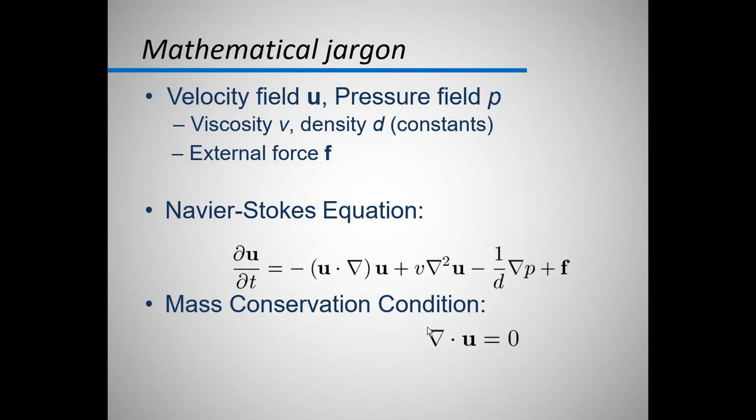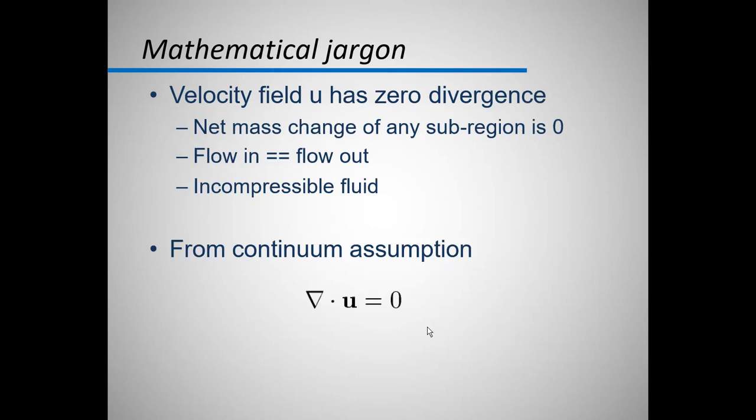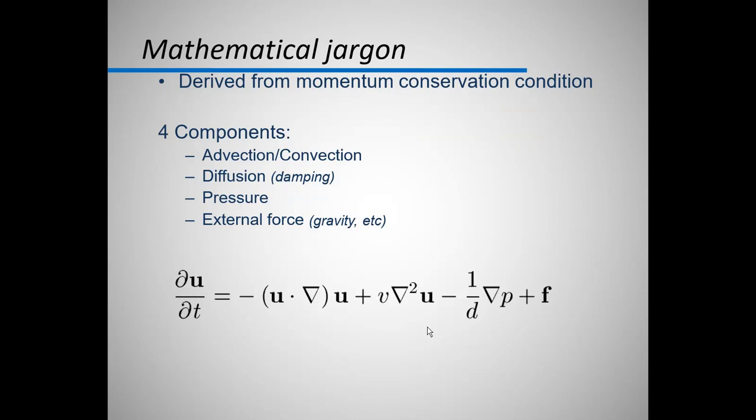We have the continuity equation which is the famous equation you might have known from your undergraduate course in fluid dynamics, that ∇·u = 0. Velocity field u has zero divergence. Net mass change of any sub-region is zero. This means that mass in equals mass out, as is written in the next line, flow in equals flow out. And we can change the assumptions like incompressible fluid. So we get this equation from continuum assumption. Then ∇·u = 0. Continuum assumption means that a continuity equation can be applied and the flow is continuous. It means that there is no space or there is no extraneous space between molecules and the flow is continuous in the form of the presence of the particles.